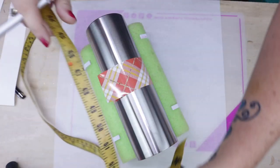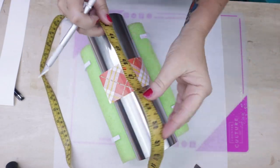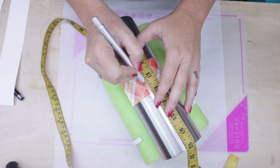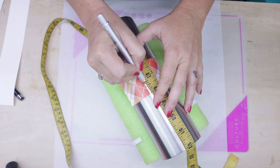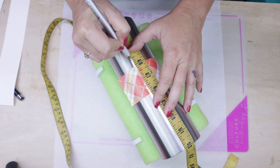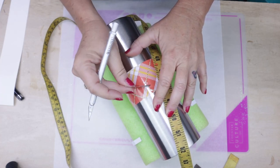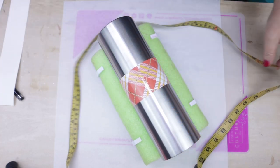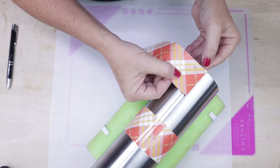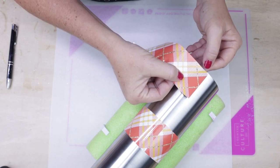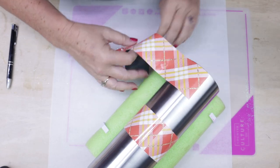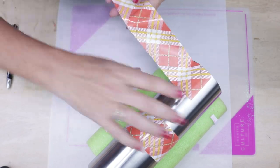Once we are happy with our placement, we're going to go ahead and cut off the excess vinyl using our craft knife. Now it's time to do the exact same thing to the top. So this time again, the backing is completely removed.